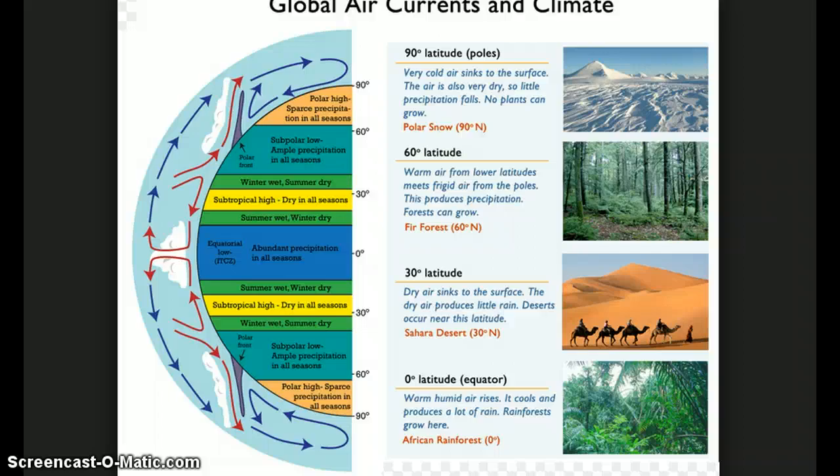Because of a lot of reasons that we're not going to get into, we wind up with areas across the world where the air is constantly rising. When the air is constantly rising, that allows water vapor in the air to rise, which can then condense into clouds and form precipitation.